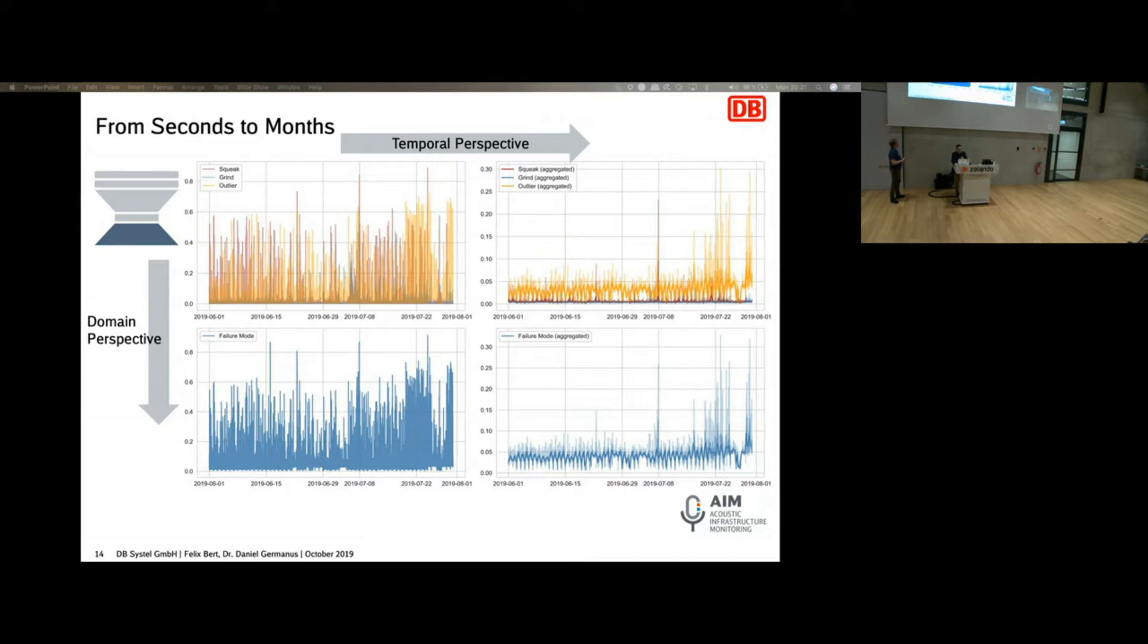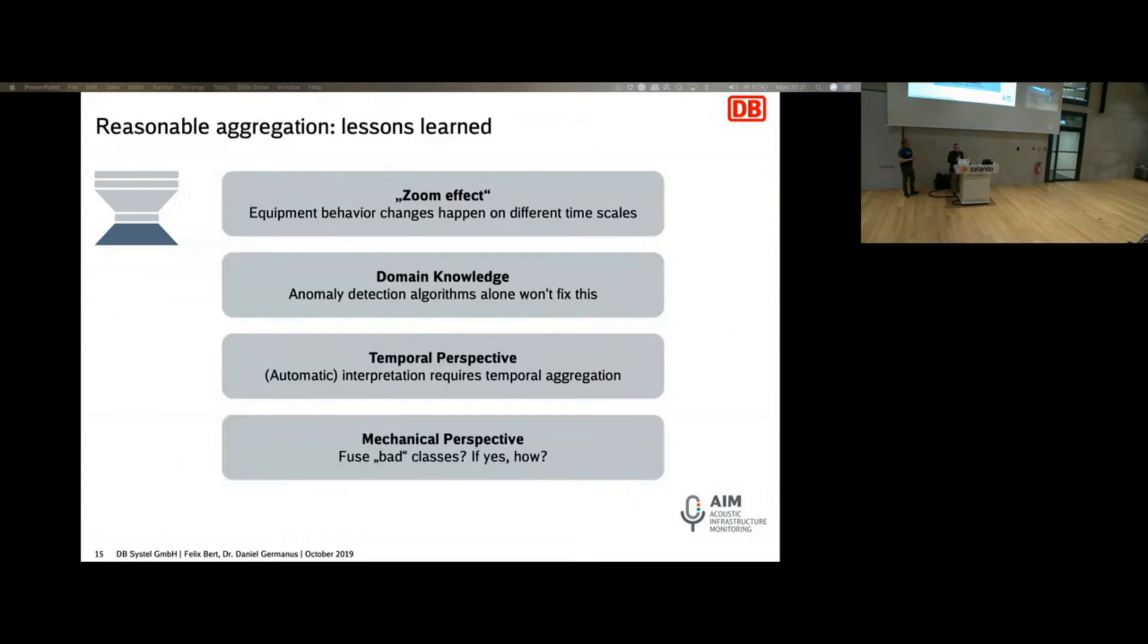Of course, you can try different ones with that. But if we see those aggregation things, we see there's some kind of zoom effect. We need to look at it not only in one kind of timeframe. We need to look at more. You need to apply some domain knowledge. Some faults might occur within one hour. Others might take much longer to come up. You have the temporary perspective that you just need to aggregate it because the output of this network is too noisy. And as I mentioned, you need to fuse those classes.